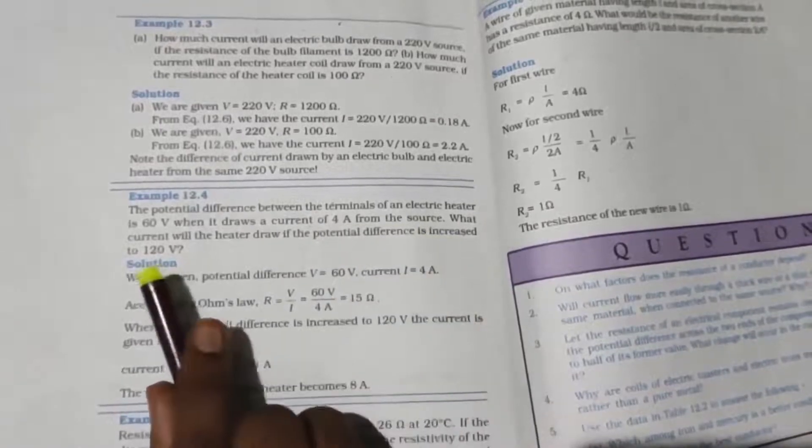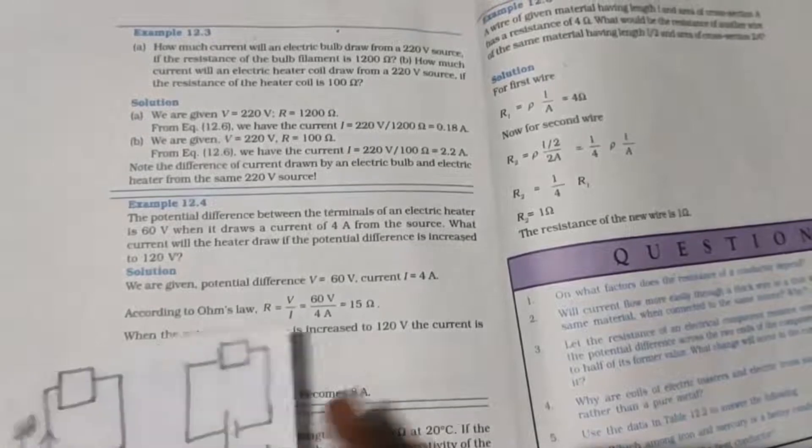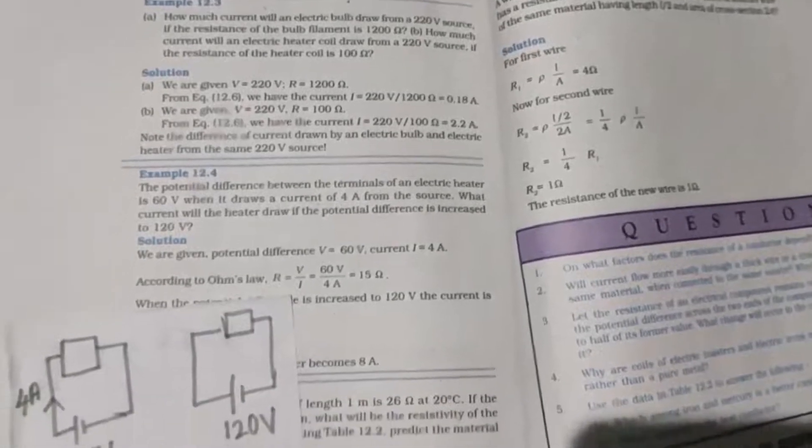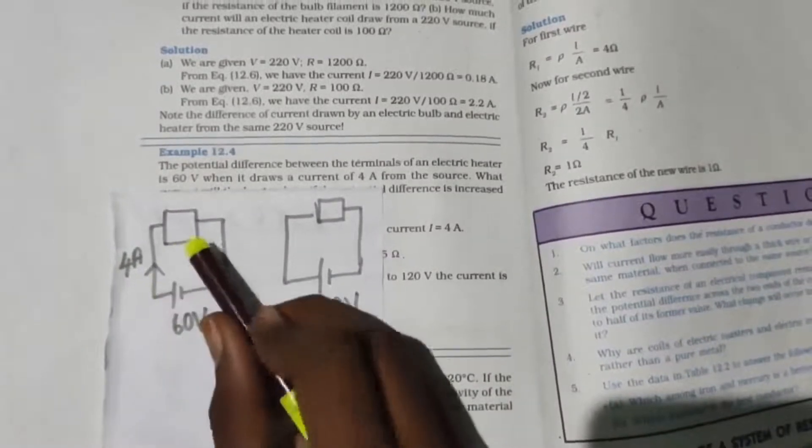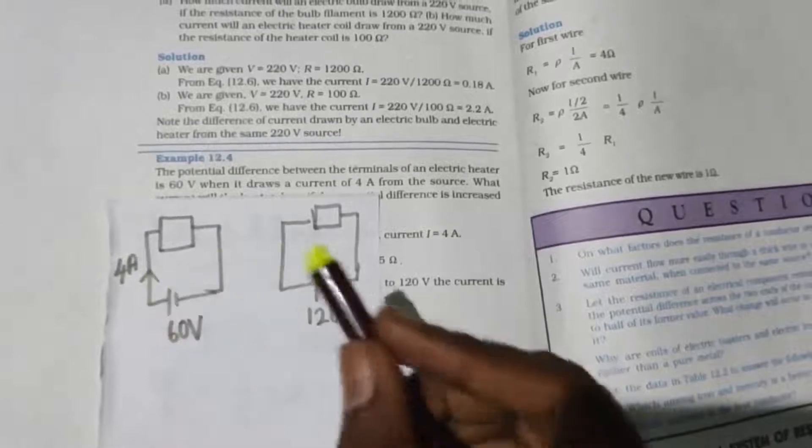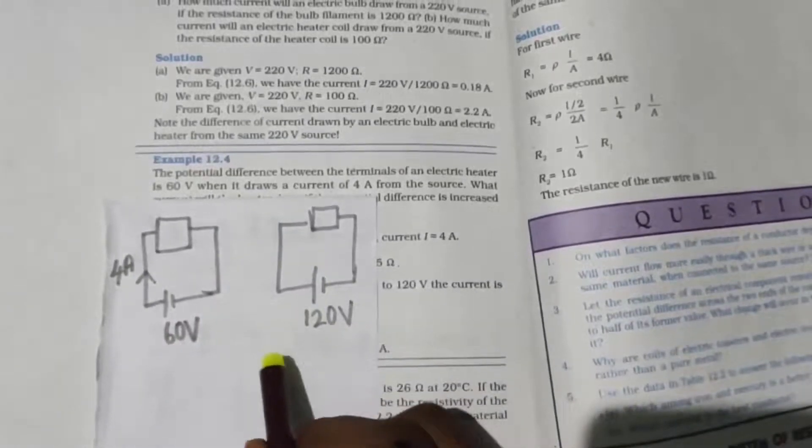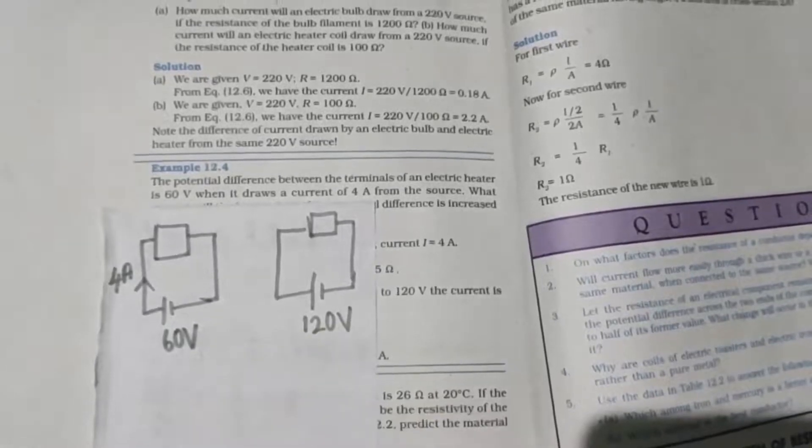Very simple question. I've just drawn a diagram to understand it. See, this one is 60 volt potential difference, and this one is 4 ampere current. Now you have 120 volts - you have to increase. What is the current?